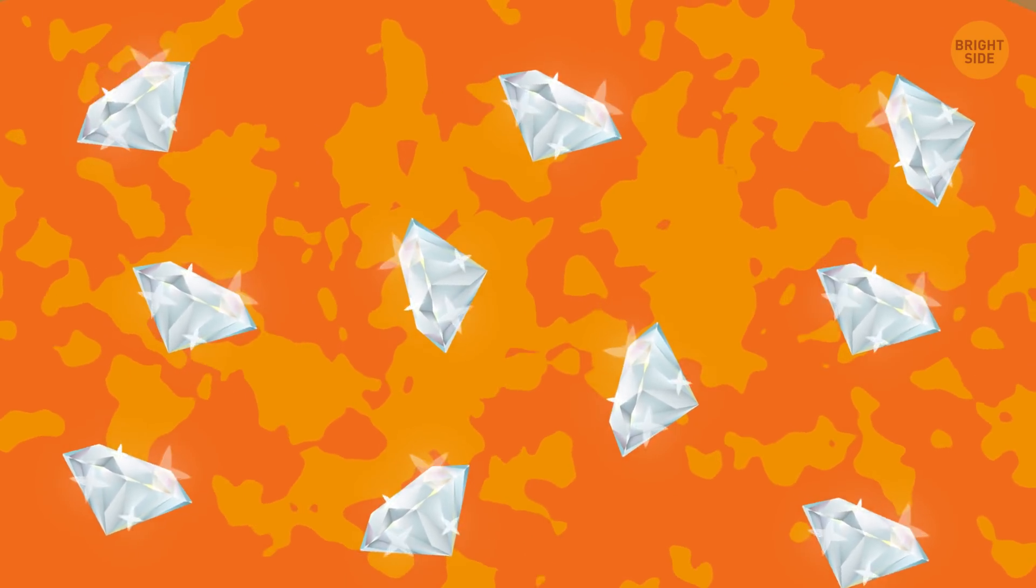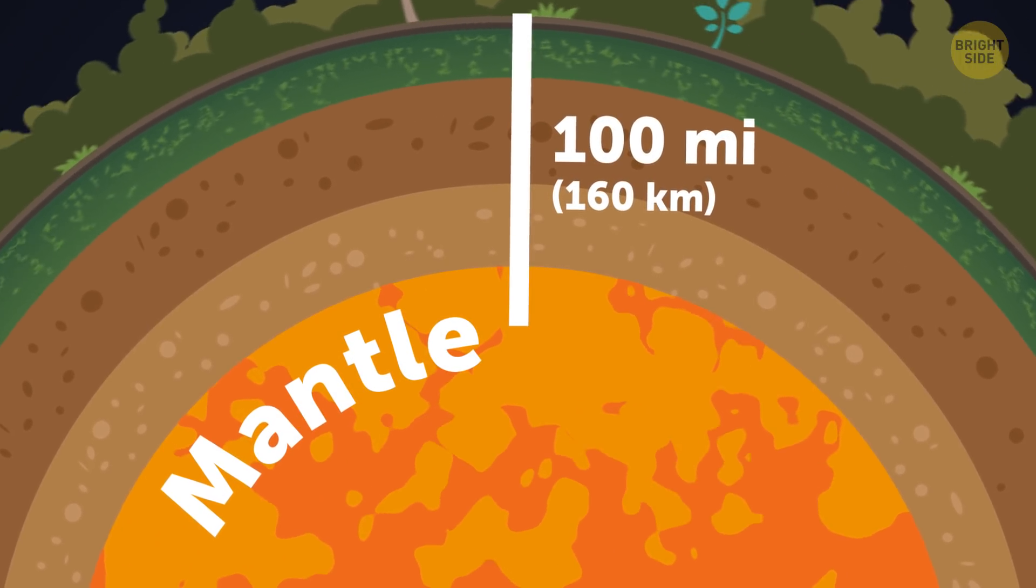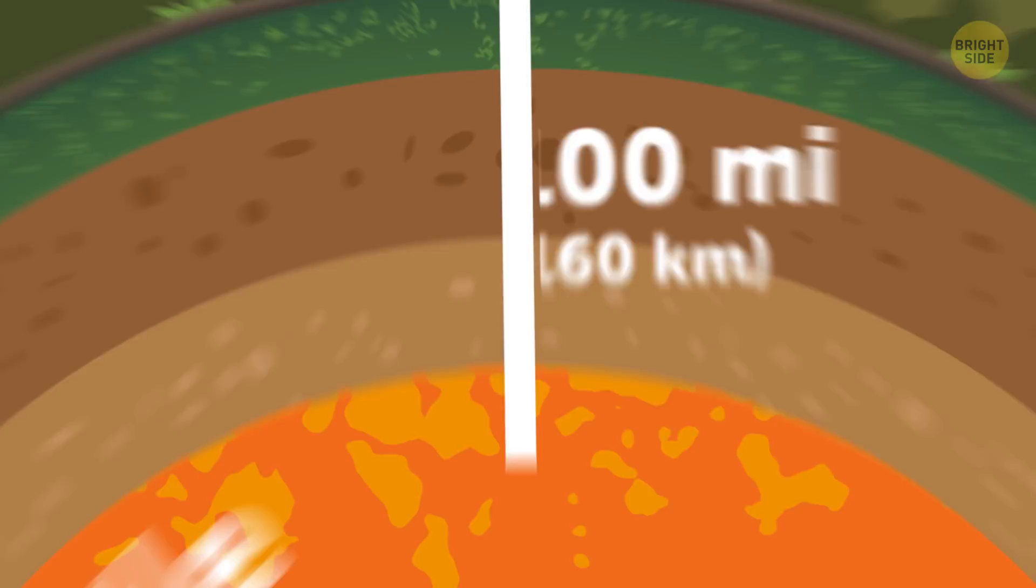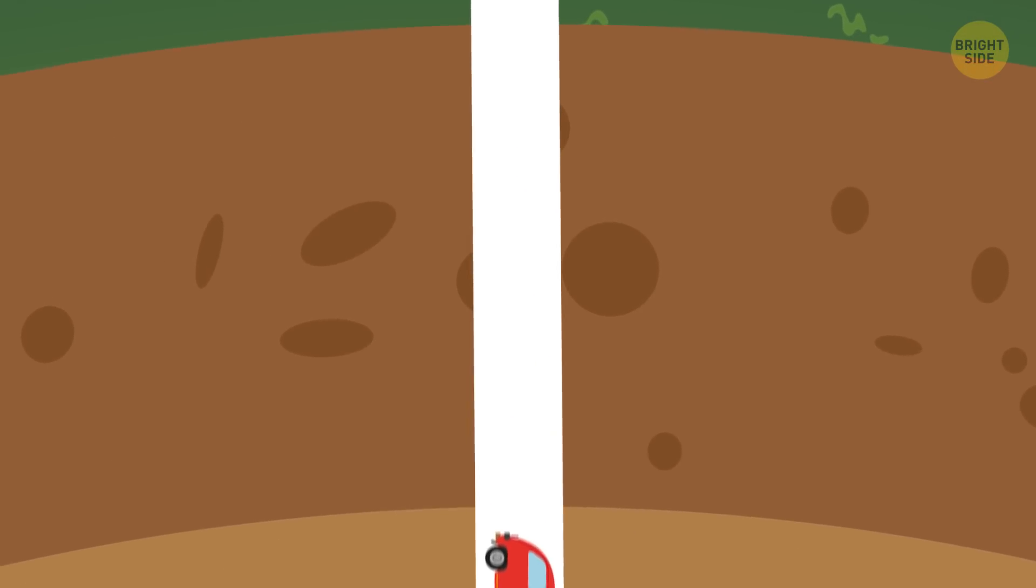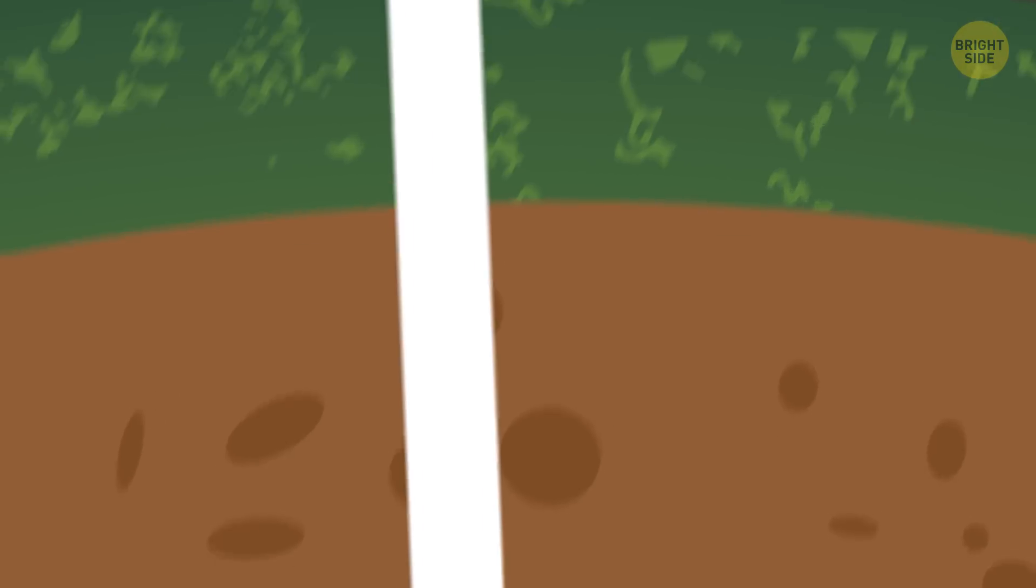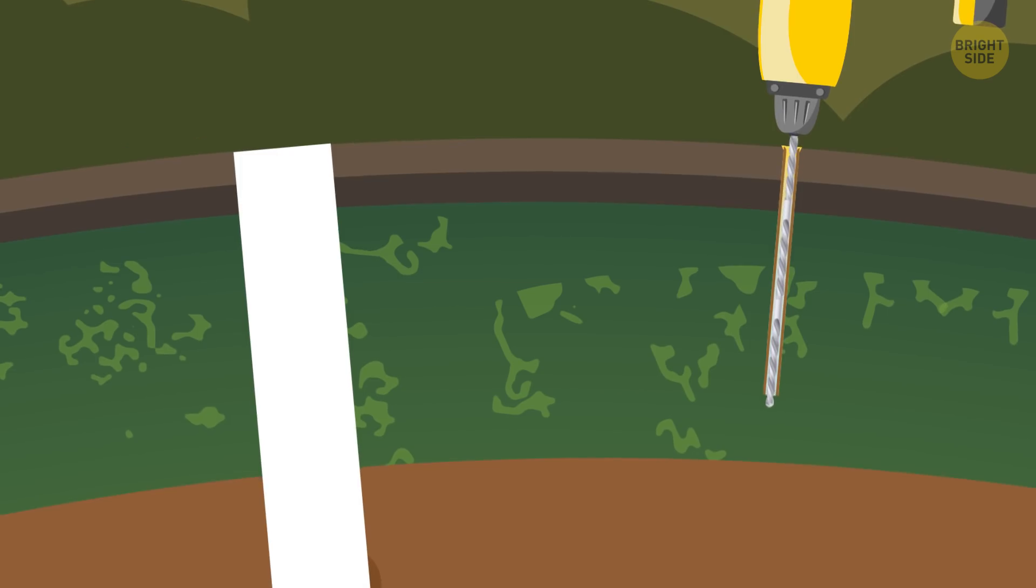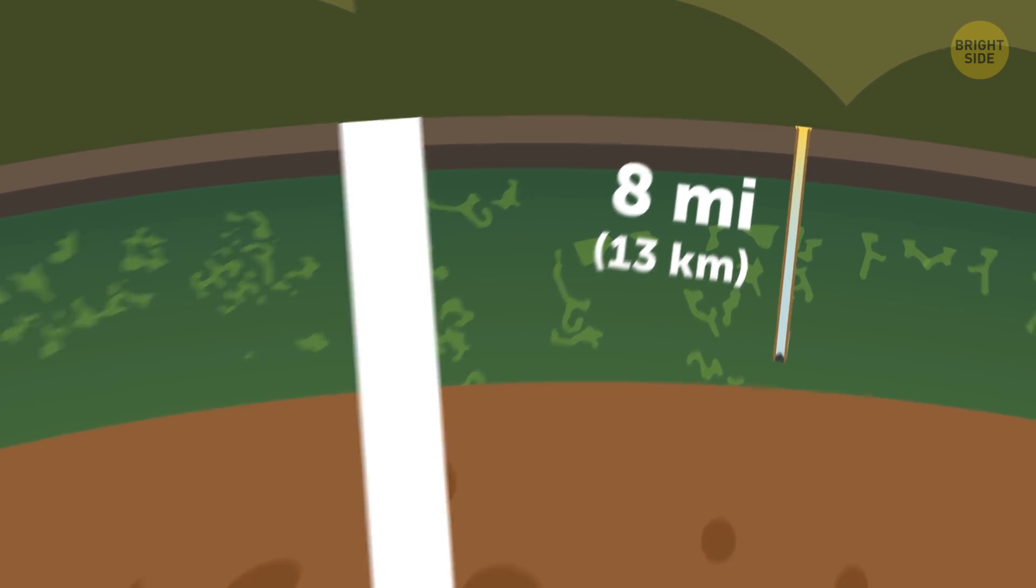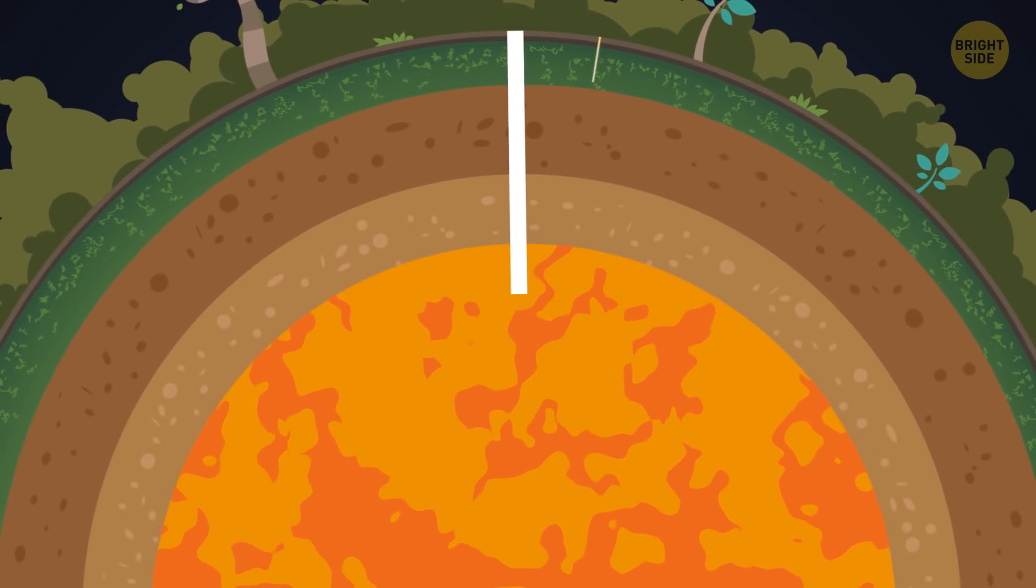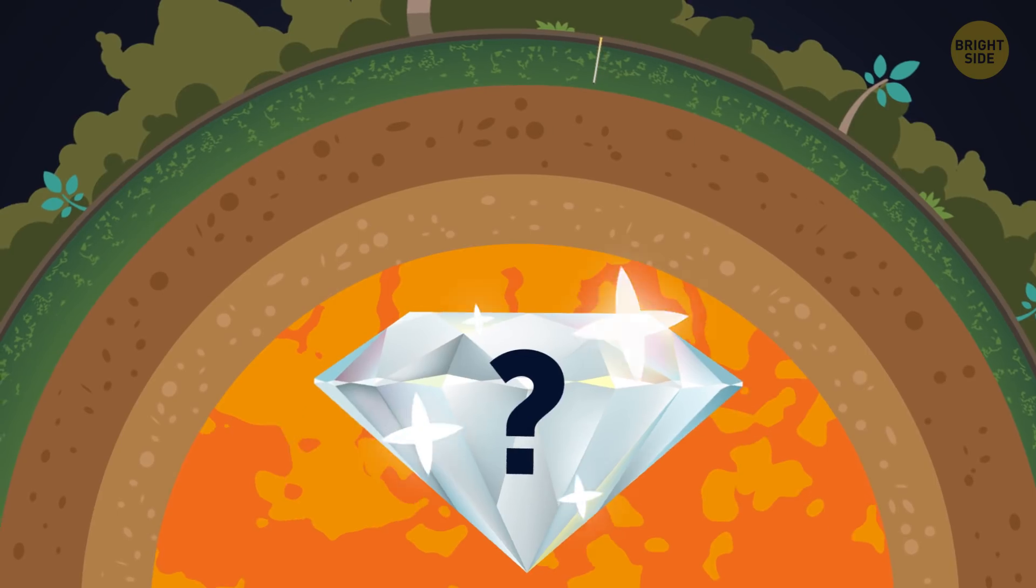Well, natural diamonds - not the ones we make, but more on those later - come from the Earth's mantle, 100 miles or more beneath our planet's surface. If you could hop in your car and drive that distance, it would take you 2 hours at highway speeds. That's a long way. A much longer trip than, say, going to the deepest anyone has ever drilled into the Earth's crust. That would be less than 8 miles. Not even a tenth of the way to the diamonds. So, if they form so deep, how do any end up here with us on the surface?